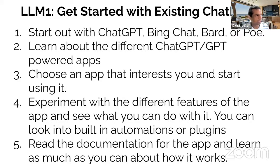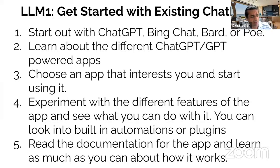There are plugins available like AI PRM that have about 2,500 prompts — you can see what they are doing. ChatGPT itself, if you pay for it, has a plugin ecosystem where it not only uses the core language model but can also talk to other systems out there, and you don't have to do any programming because those plugins are already there.